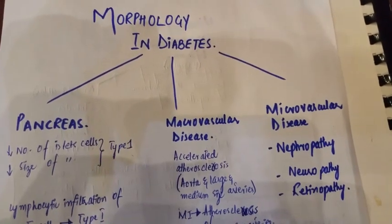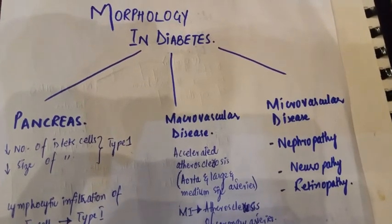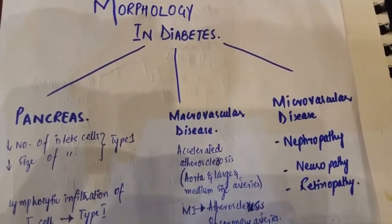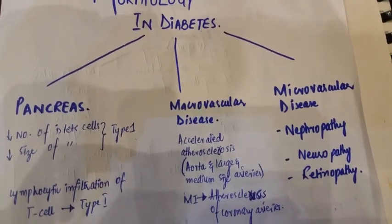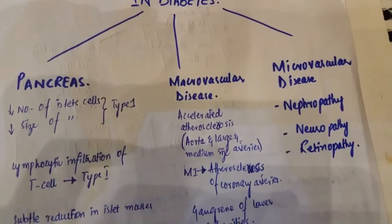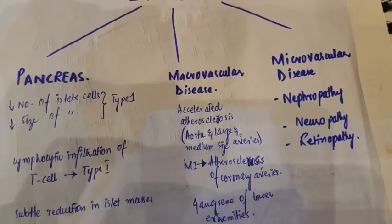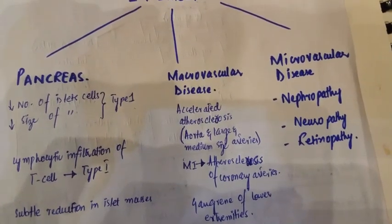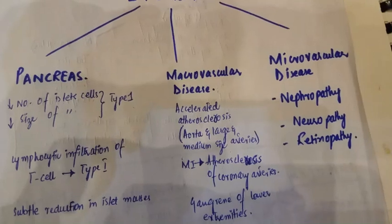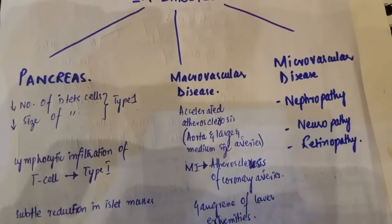I am going to talk about the morphology in diabetes — what happens in the different organs due to diabetes. First of all, I will talk about the pancreas. The number and size of the islet cells decreases, as happens in type 1 diabetes.